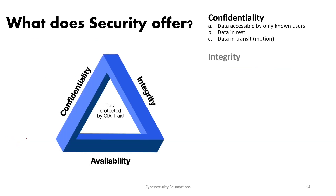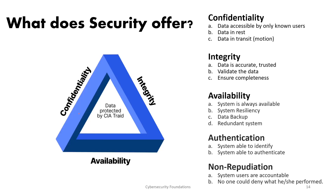To recap what security offers: security helps organizations achieve confidentiality, integrity, and availability, and it can help them achieve authentication, accountability, and non-repudiation by making system users accountable so they cannot deny what they performed on the system.